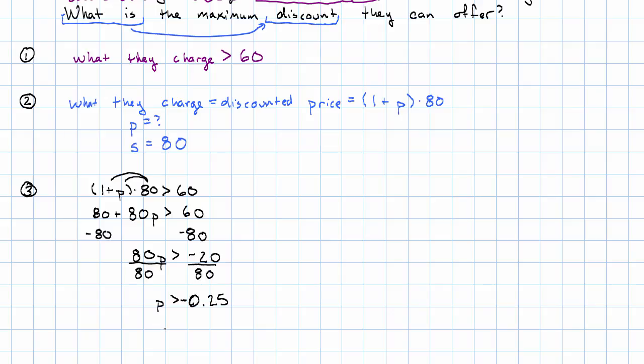So, in the context of our story, then, we have to think a little bit. P is greater than negative 25%, right? We want it as a percent in our story. The story is asking us for the maximum discount, but here we got P is greater than. What's going on?